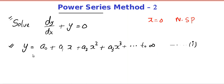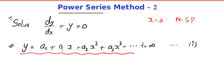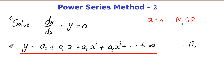I am allowed to do that because I know that x equal to 0 is a non-singular point. Remember, such a solution exists when x equal to 0 is a non-singular point. In the last video, we discussed how to find whether x equal to 0 is a non-singular point. Look at the order, the coefficient, and that's it — it's a non-singular point.